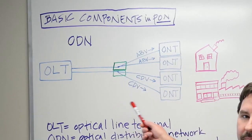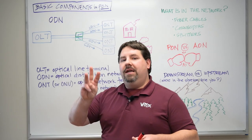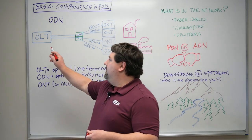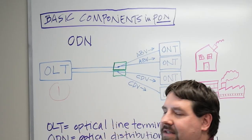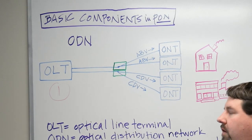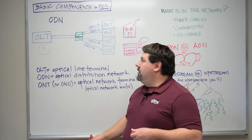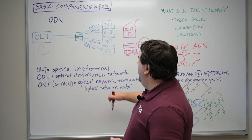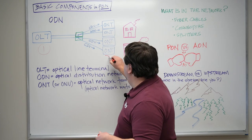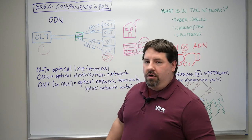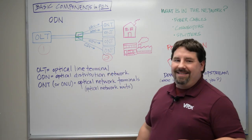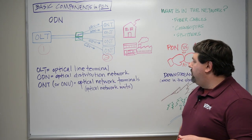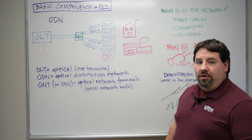Basic PON architecture has three major components that we're going to talk about. The first one is our OLT — in our central office, this is our optical line terminal. The information is coming through here into the network, and it's going to terminate on where our users are, on our ONT or our ONU — that's just the optical network terminal or the optical network unit.